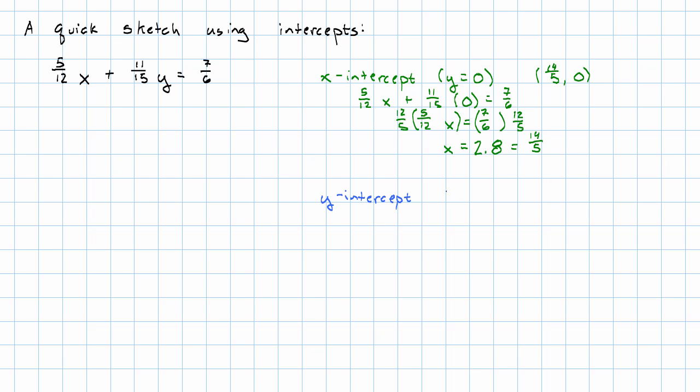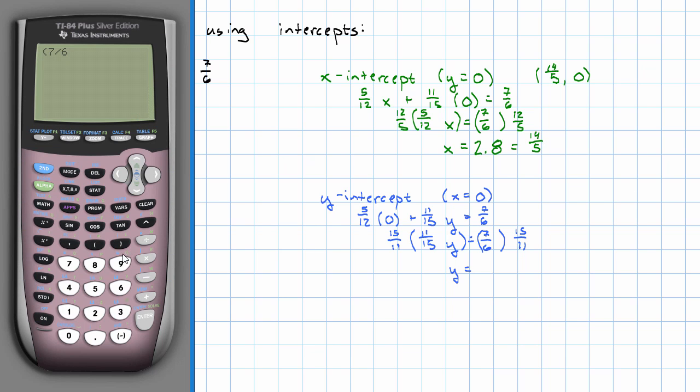Our y intercept, that's where x is 0, will have 5 twelfths times 0 plus 11 fifteenths y equals 7 sixths. So just 11 fifteenths y is 7 sixths. Again, we can think of this next step as dividing or as multiplying by 15 elevenths. We're left with y equals 7 sixths times 15 elevenths.